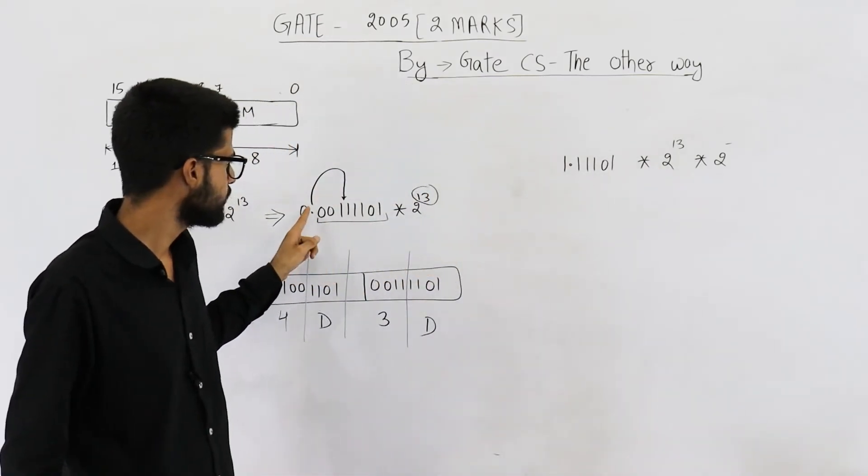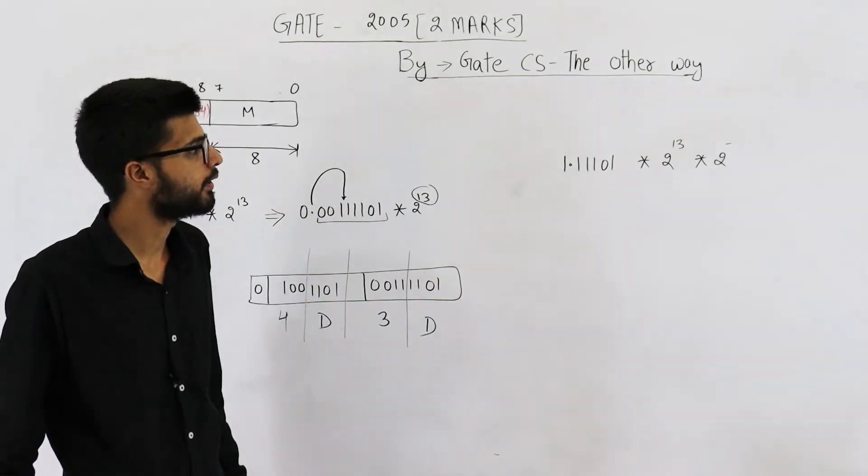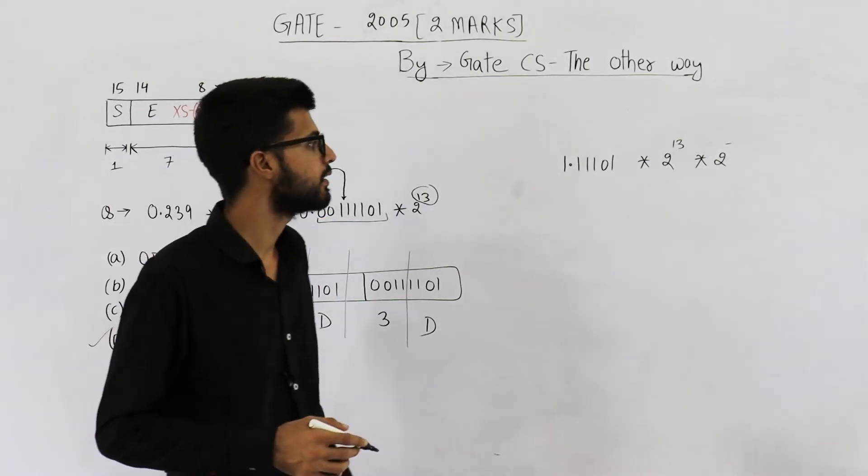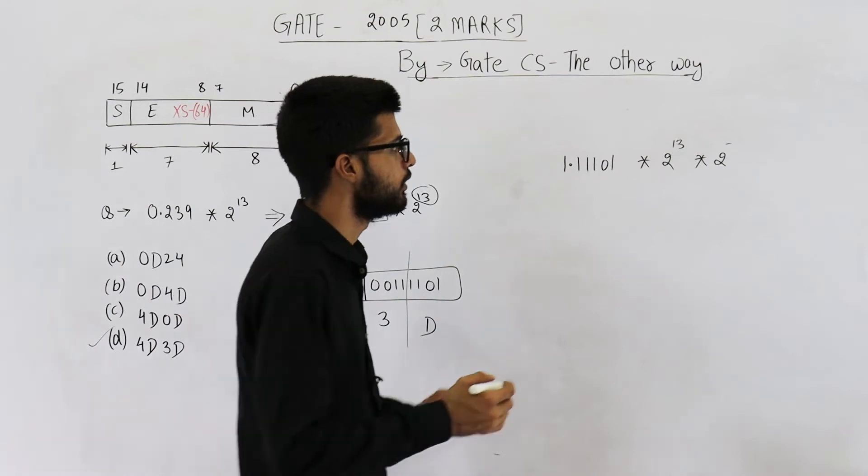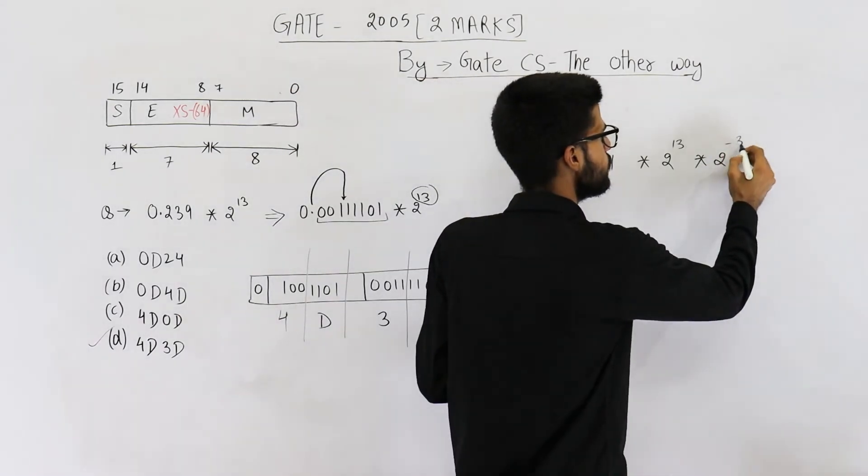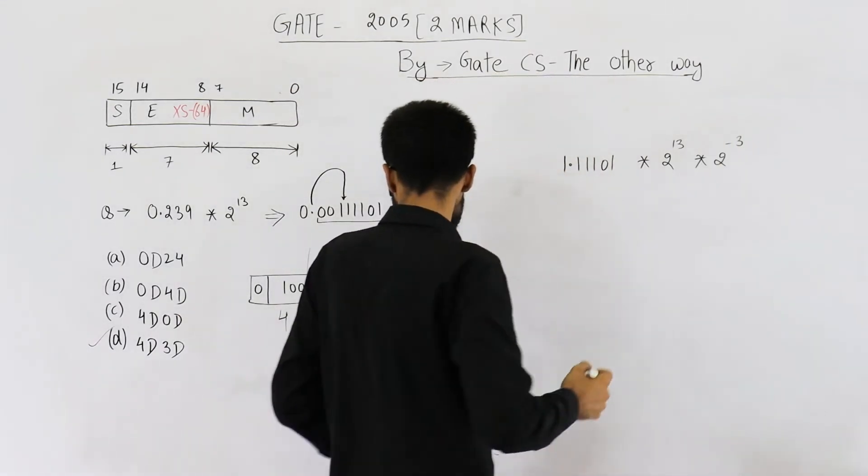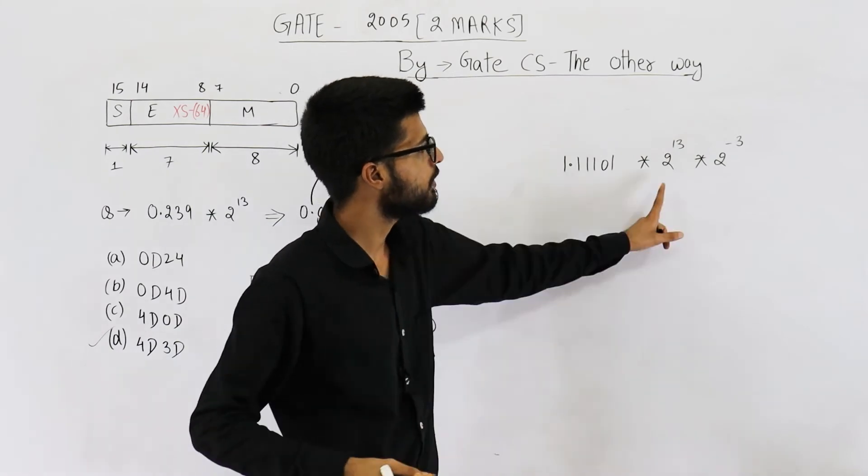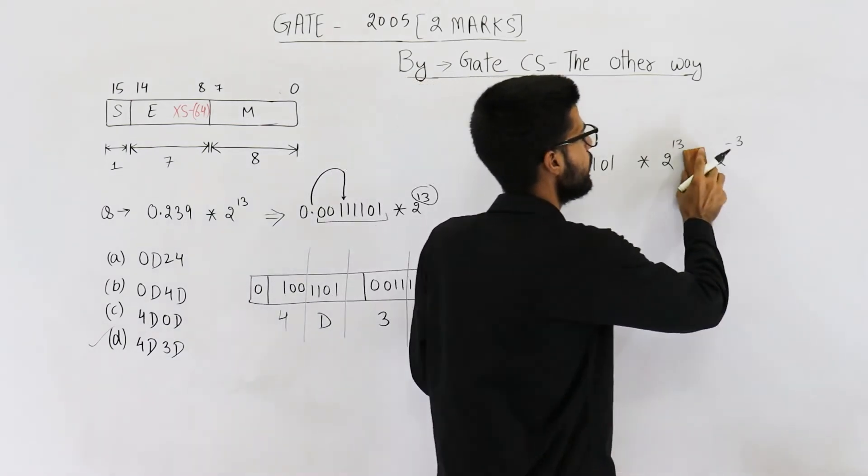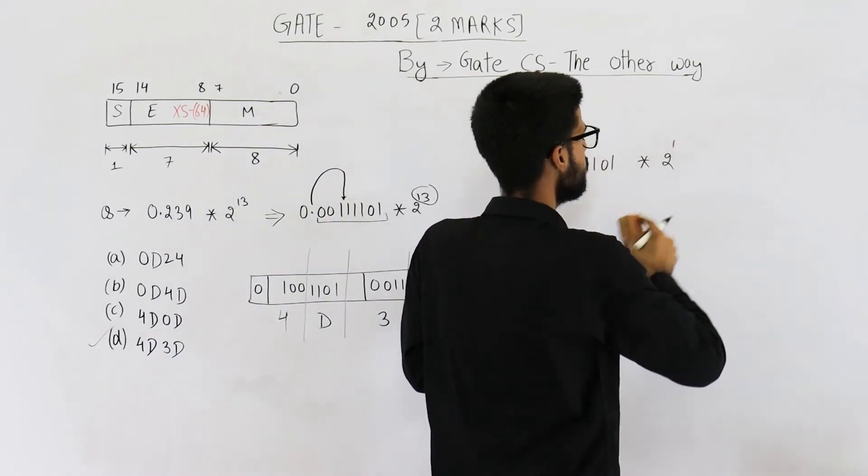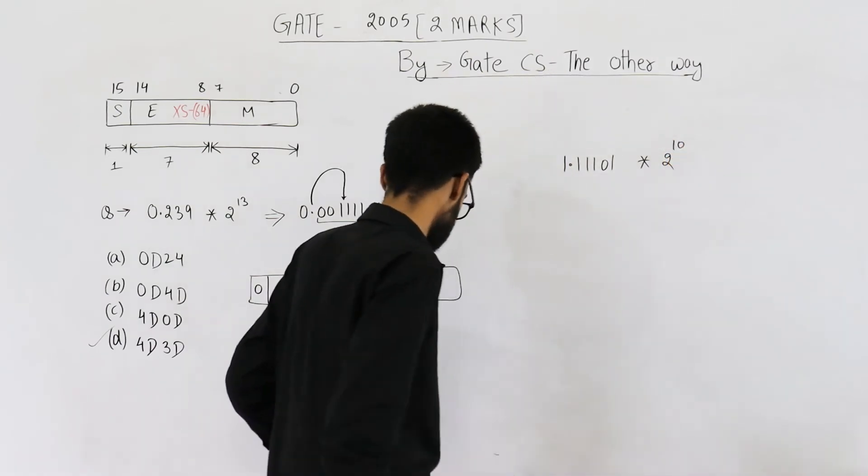See, if we shift this radix point three digits to the left, sorry to the right, you are going to get 1.11101. So I have written 1.11101. This 2^13 is left as it is. Now for compensating the shift of this radix point, we need to divide this by 2^3. So I am multiplying it with 2^-3. This will become 2^(13-3). 13 minus 3 is 10. So we are left with 2^10.